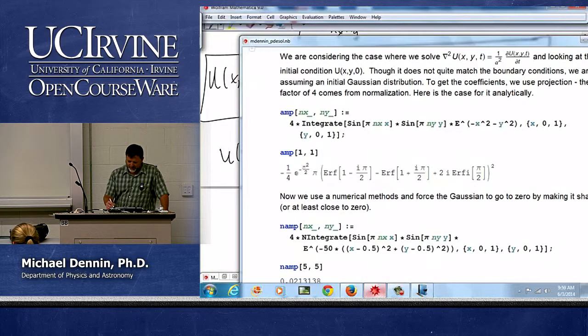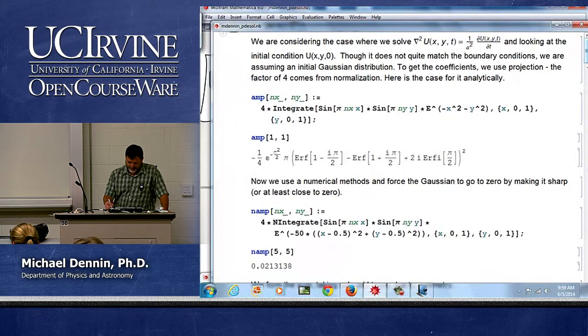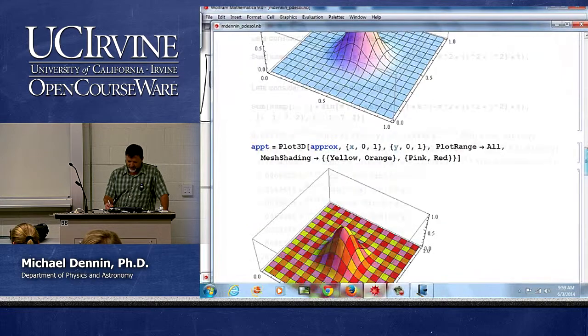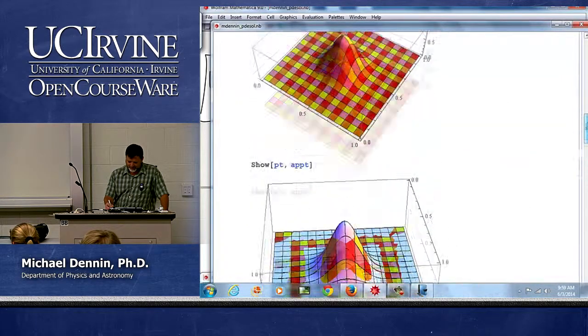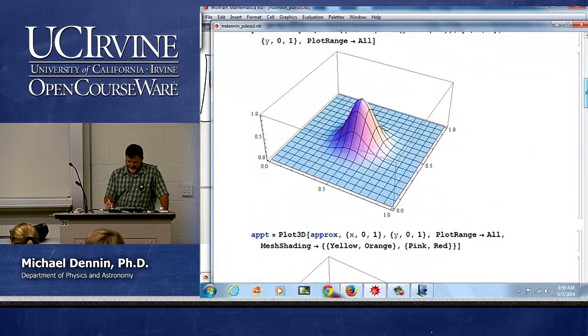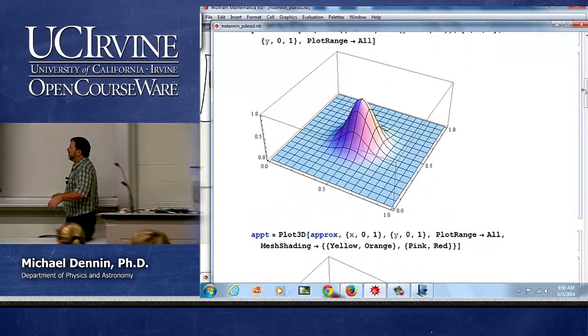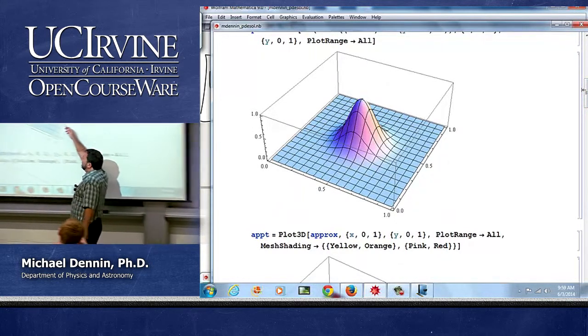If I look at it in Mathematica we'll skip down to the plot, it looks like that. I got some funky colors going later on but it looks like that, it's a Gaussian.